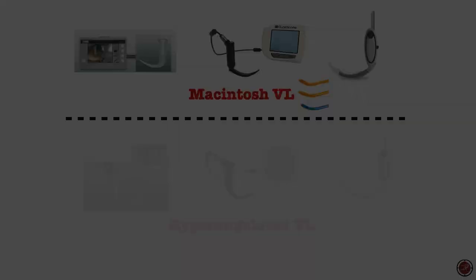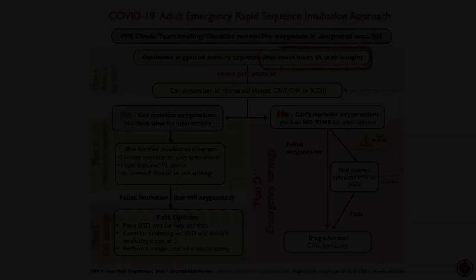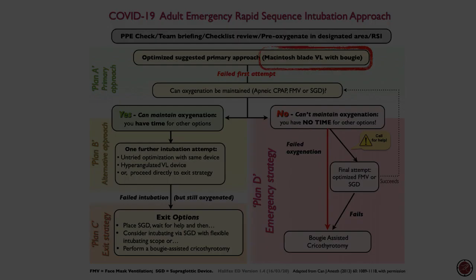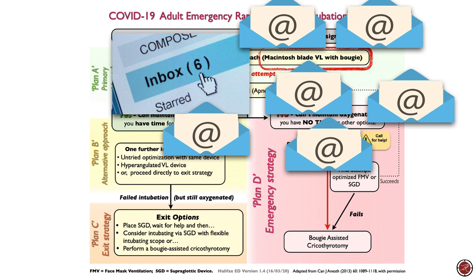Within those videos I talk about the do's and don'ts of using the bougie with various devices. The focus here is going to be on standard geometry or Macintosh blade video laryngoscopy. This is our algorithm used during COVID-protected airway management, with Macintosh blade VL and routine bougie use as the primary approach. I've received a lot of email about challenges people are having with bougie use on VL devices — that was the motivating factor for this video.